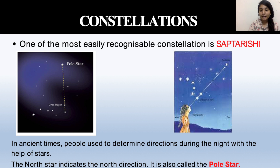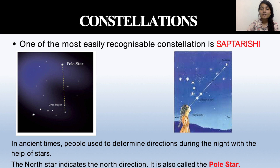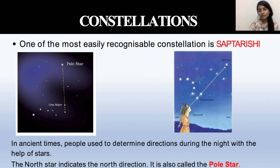One major thing to highlight is the Polestar. The Polestar is a direction star — it was used in ancient times to find the north direction. If you look at the picture, a person is looking straight at a star; there are two pointer stars, and the third star in that line is the Polestar, which is brighter compared to the others.